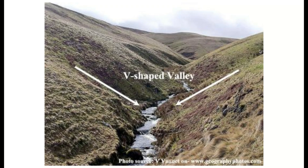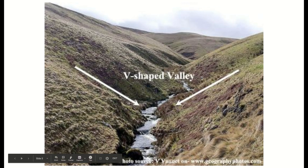Soil creep and slumping are driven by gravity causing soil and rock to slowly slip down towards the valley floor. The softer the rock and the steeper the slope, the faster this can happen. Heavy rainfall is also important — saturated soil becomes heavier and provides a lubricant for clasts to slip down. Finally, the river carries away the deposited sediment downstream, leaving the channel clear and gradually widening the V-shaped valley over time.